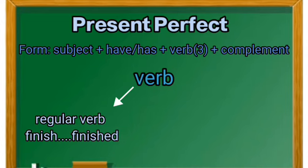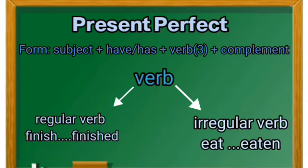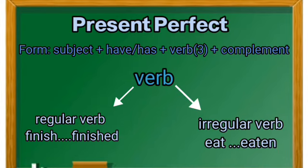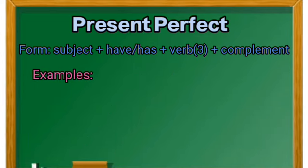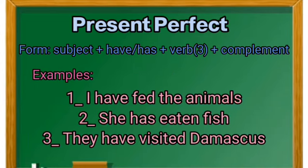Regular verb وهو فعل نظامي، ويكون بإضافة ed للفعل حتى يصبح بالماضي، مثل finish تصبح finished. وIrregular verb وهو فعل غير نظامي، وفيه يتغير شكل الفعل بالكامل، مثل eat تصبح eaten في التصريف الثالث.